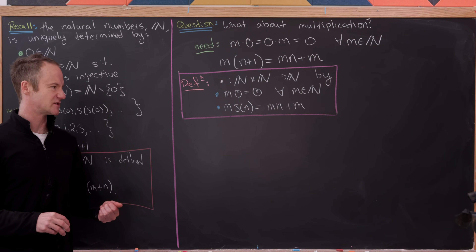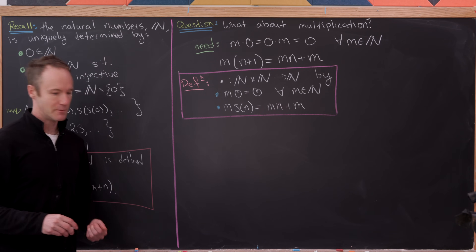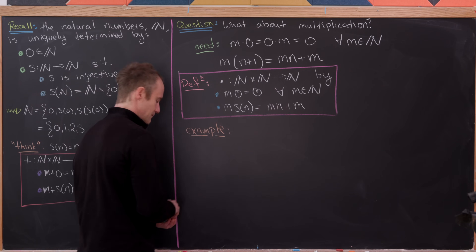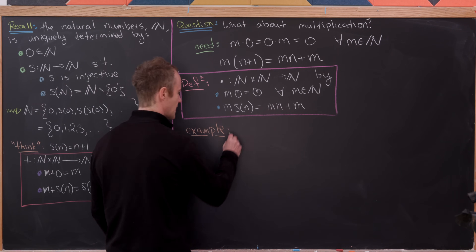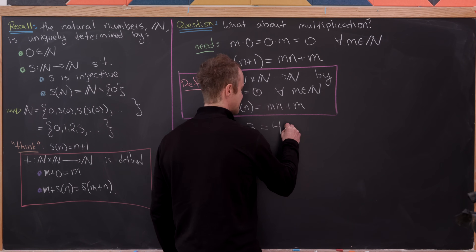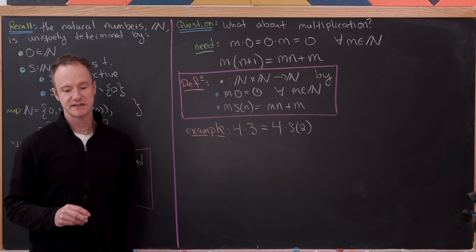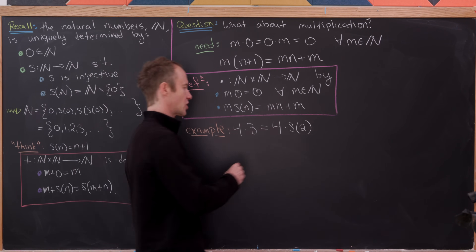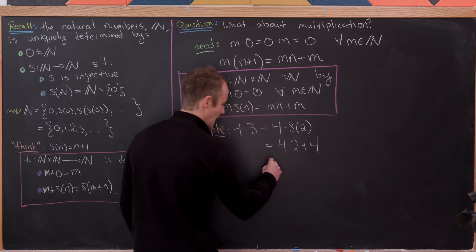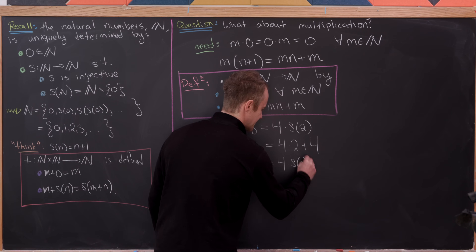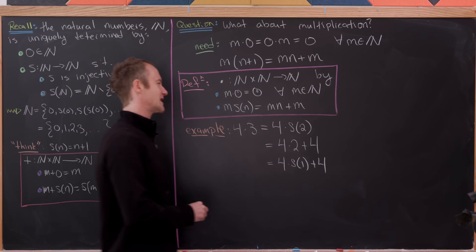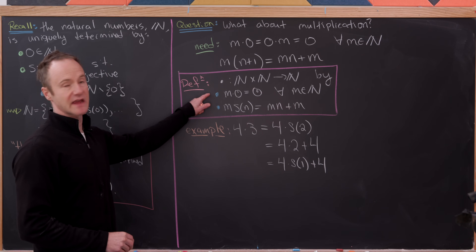Before we prove that this definition satisfies all the rules we want, let's work out an example calculation just to make sure it's making sense. Let's look at 4 times 3. Obviously we should get 12. Observe that that's the same thing as 4 times the successor of 2, because 3 equals the successor of 2. Using our recursive rule, that's the same thing as 4 times 2 plus 4. We could write that as 4 times the successor of 1 plus 4, since 2 equals the successor of 1. We'll keep using this rule until we encounter the first rule.